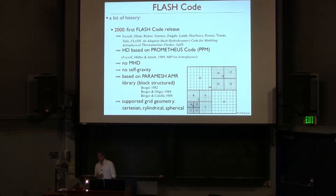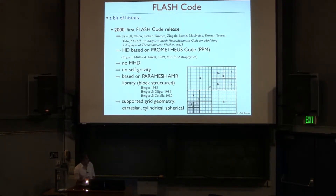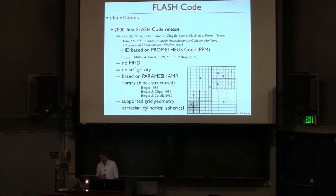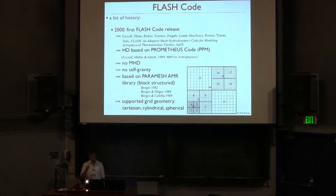At that time there wasn't any MHD solver and no self-gravity, but the entire thing was already built on the so-called Paramesh library, which is always delivered with the FLASH code. It's a block-structured adaptive mesh refinement: you divide your cells always by a factor of two, and neighboring blocks are only off by a factor of two at most. That's a very ordered, block structure — in 3D it's an octree-based distribution of your blocks.